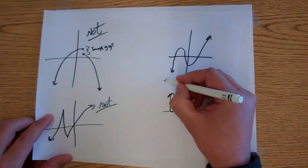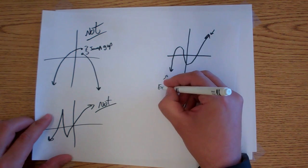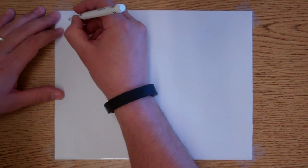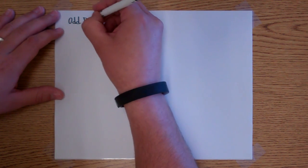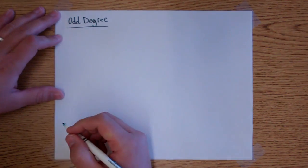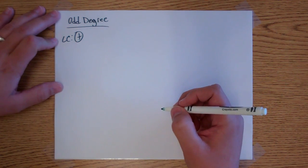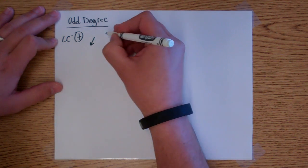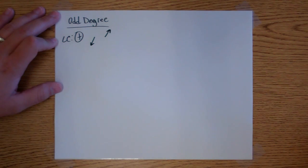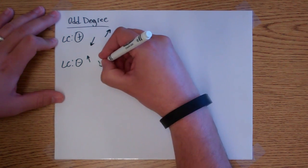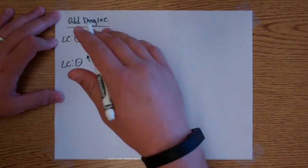Now if you notice, this one goes down on the left and this one goes up on the right. This is called the end tails, and we're going to go over end tail behavior. With end tail behavior, if you have an odd degree and your leading coefficient is positive, it's going to go down to the left and up to the right.